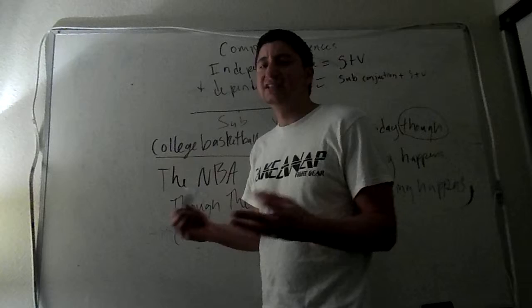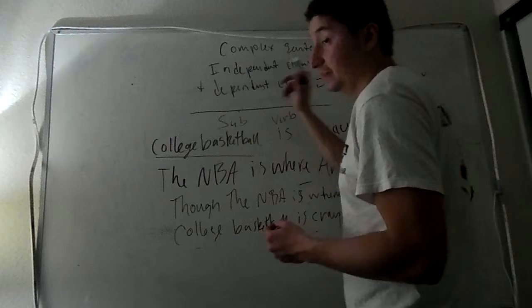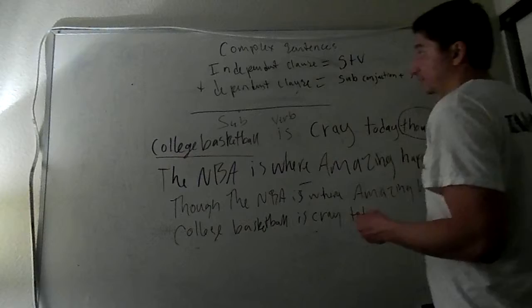What's an independent clause? An independent clause is a subject plus a verb. A dependent clause is a subordinate conjunction plus a subject plus a verb.